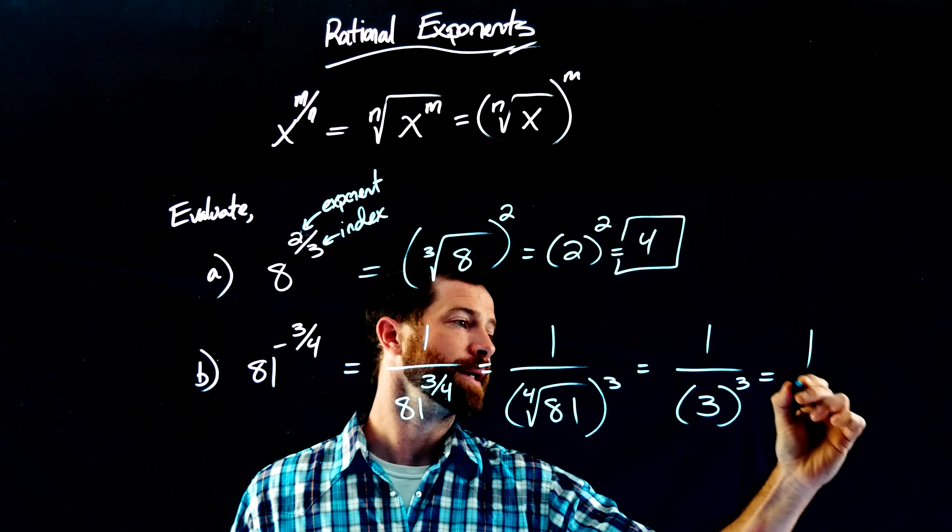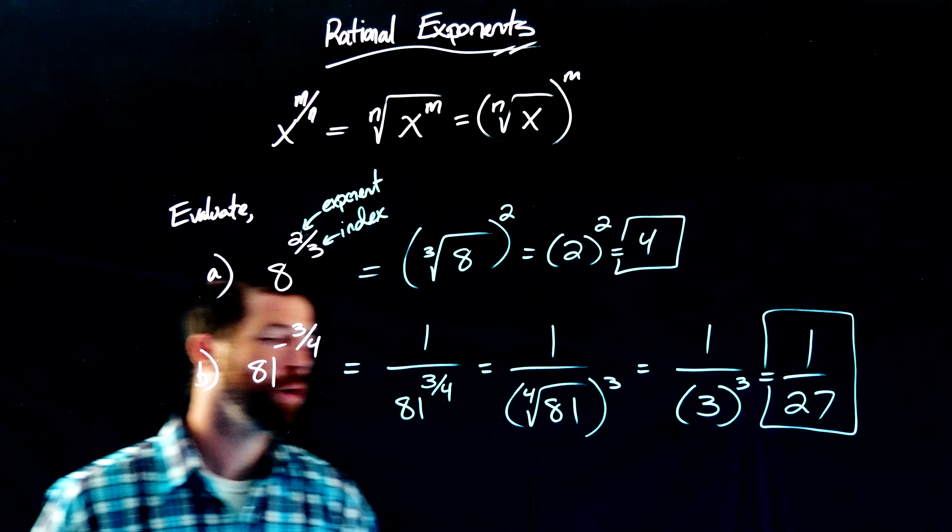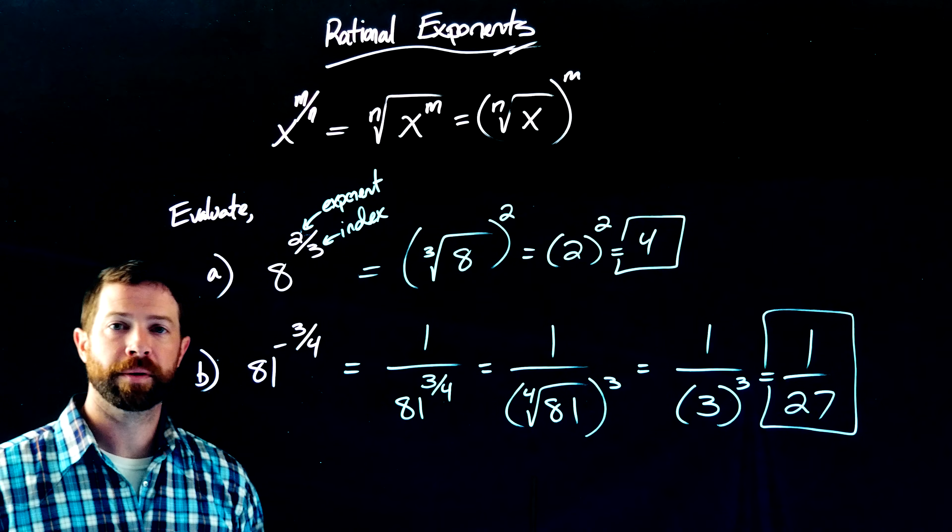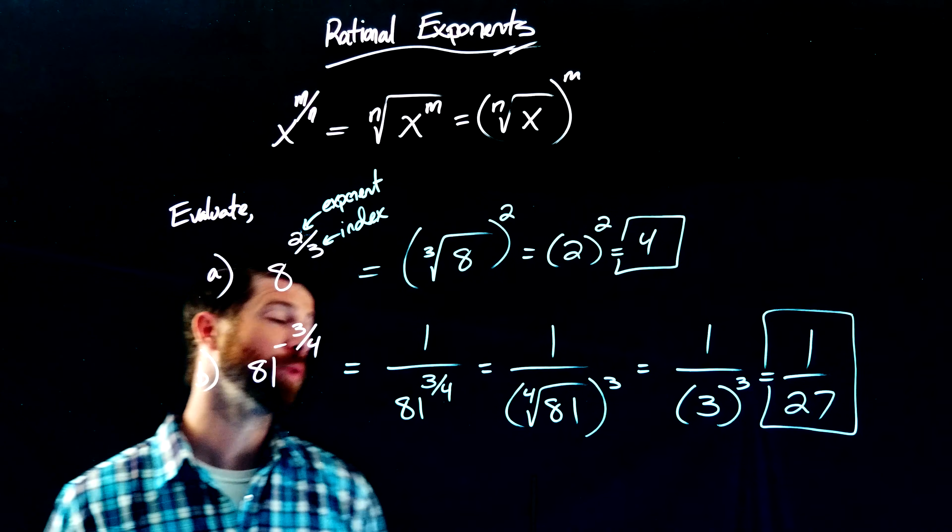So we've got the fourth root of 81 that I know is 3. 3 to the third is 27. So 81 to the negative 3 fourths is an ultra-fancy way of writing the fraction 1 over 27.